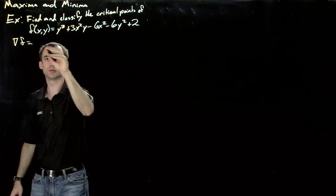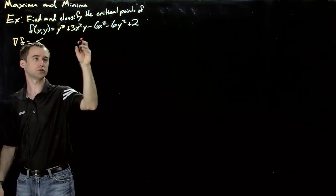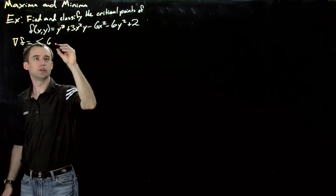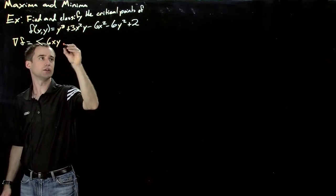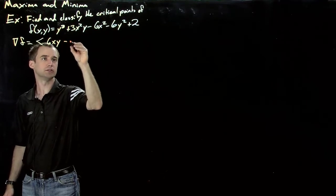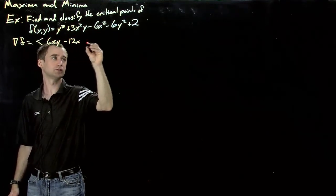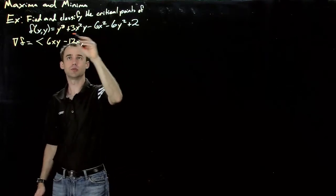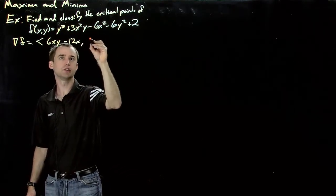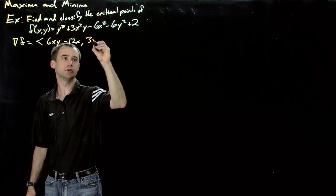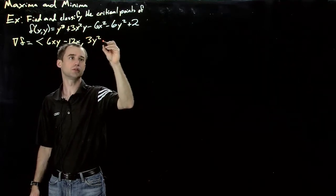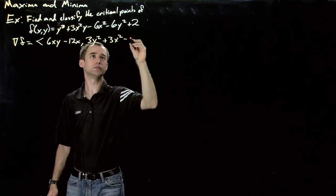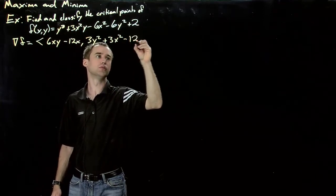Well, this is not terribly hard to do. So first we take the derivative with respect to x. That gives us 6xy minus 12x comma derivative with respect to y would be 3y squared plus 3x squared minus 12y.